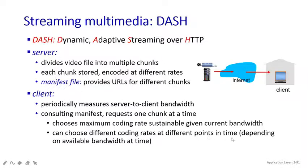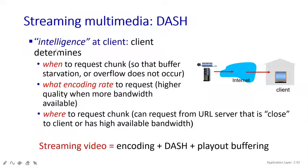The client can also choose different coding rates at different points in time. For example, at one o'clock a chunk may be sent with a high data rate, and at two o'clock the next chunk is again sent with a high data rate — data is sent at different times to the client.